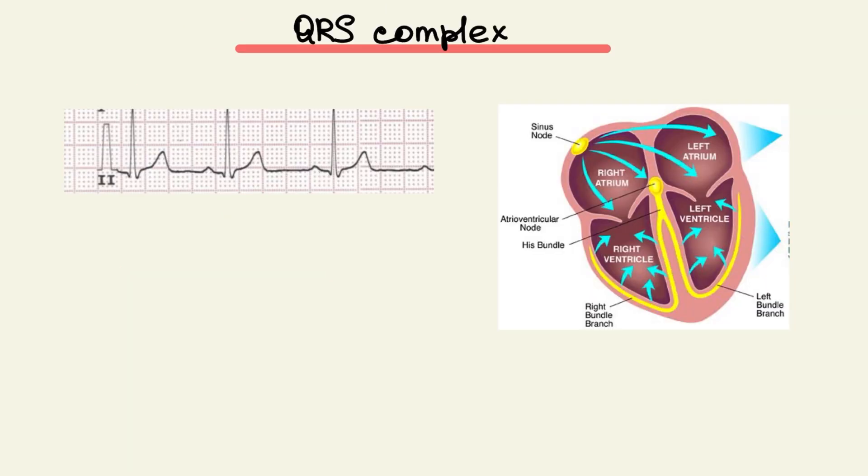QRS complex consists of three waves: Q, R and S. R wave, any positive wave of complex. Q wave, negative wave before R wave. And S wave, negative wave after R wave. Normal duration is less than or equal to 0.1 seconds.